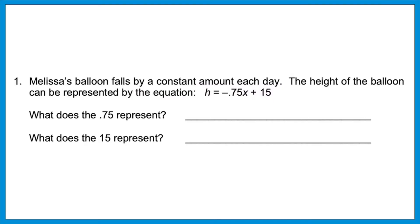Let's start with modeling a linear situation. Some of you might remember this first question from video 24. Let's quickly refresh the concept and then we'll get to some harder variations. Melissa's balloon falls by a constant amount each day. The height of the balloon can be represented by the equation h equals negative 0.75x plus 15. What does the 0.75 represent and what does the 15 represent?